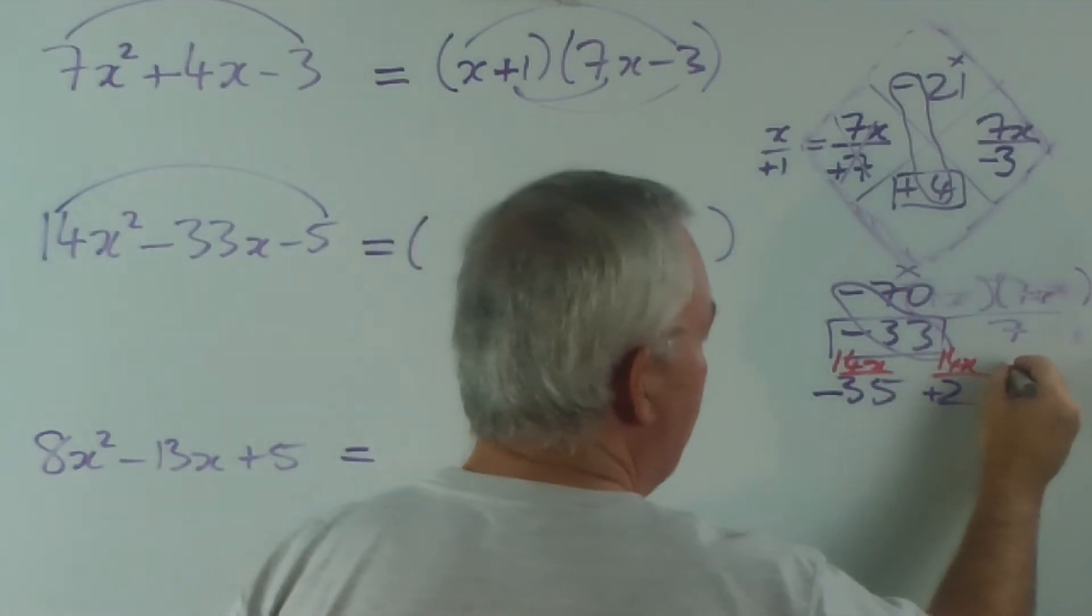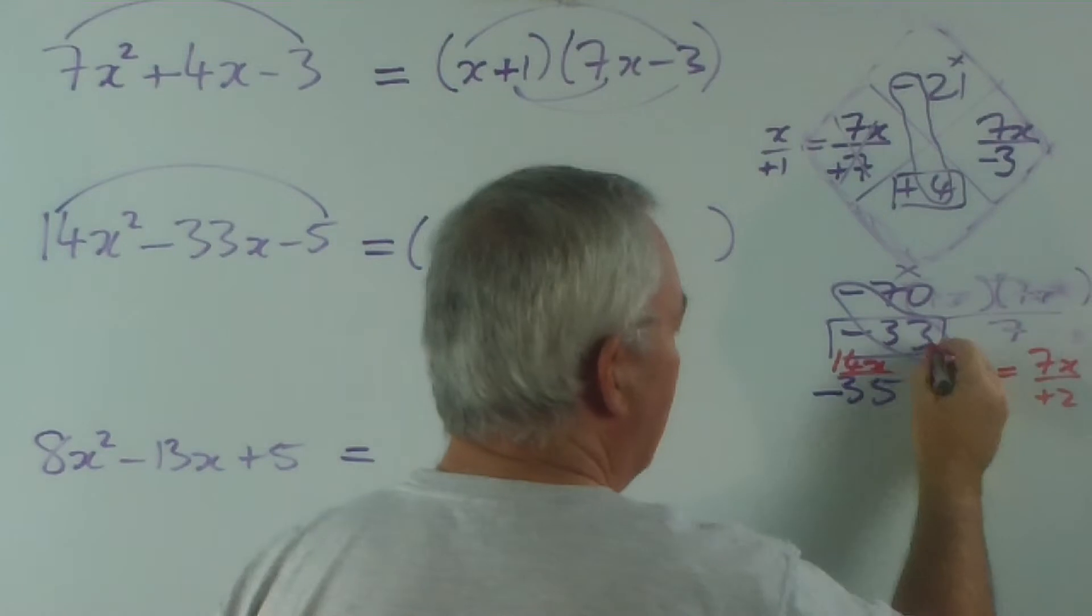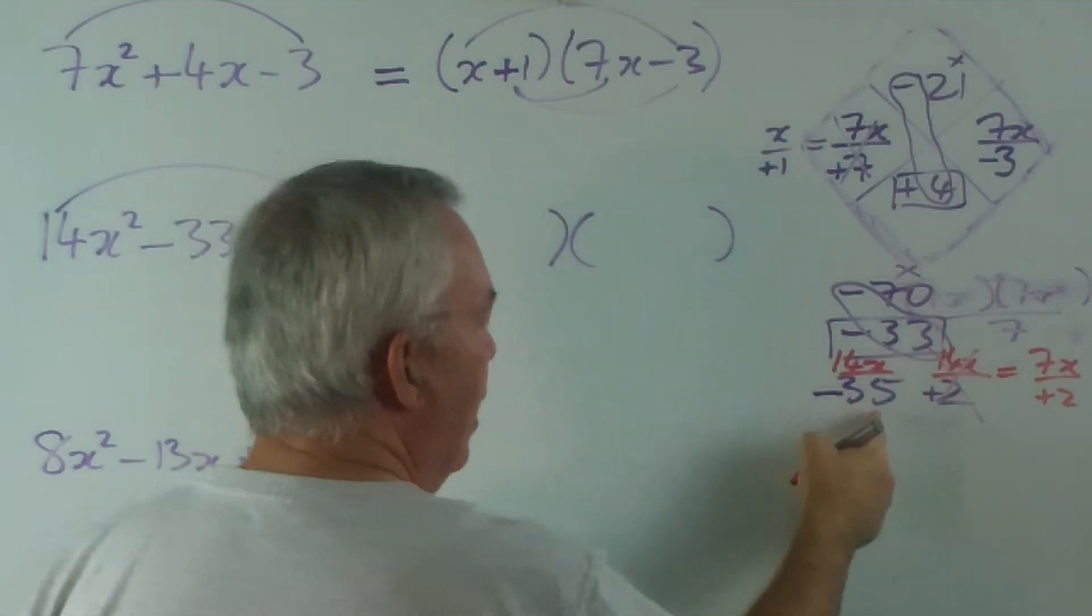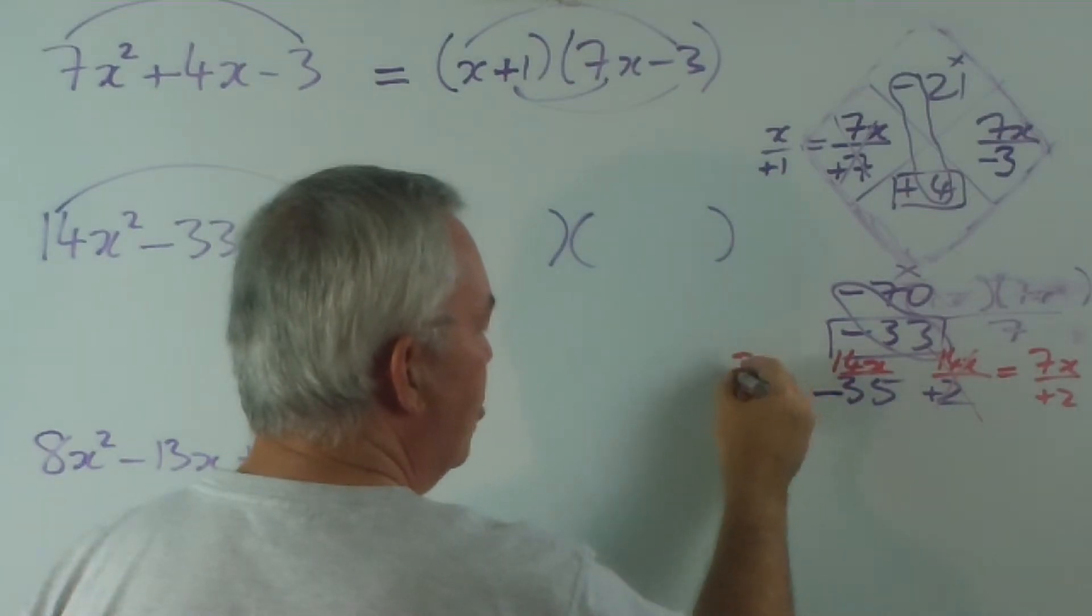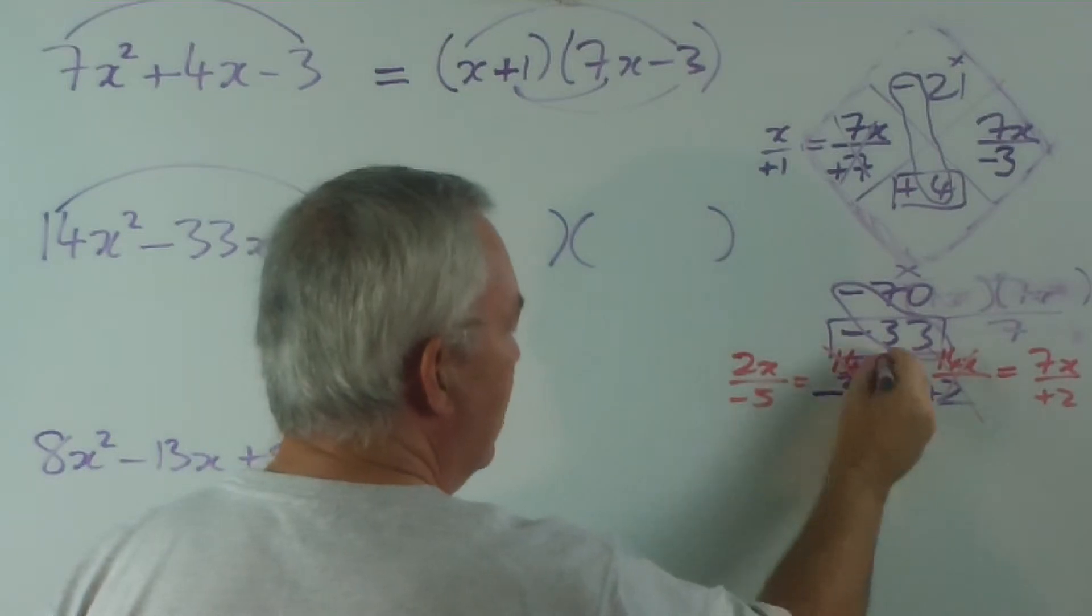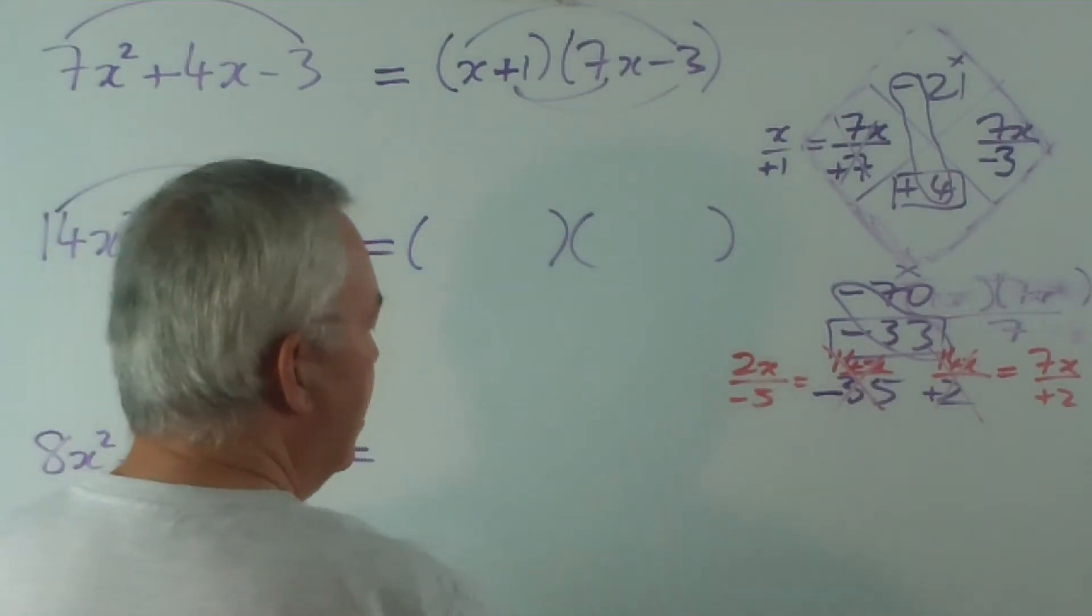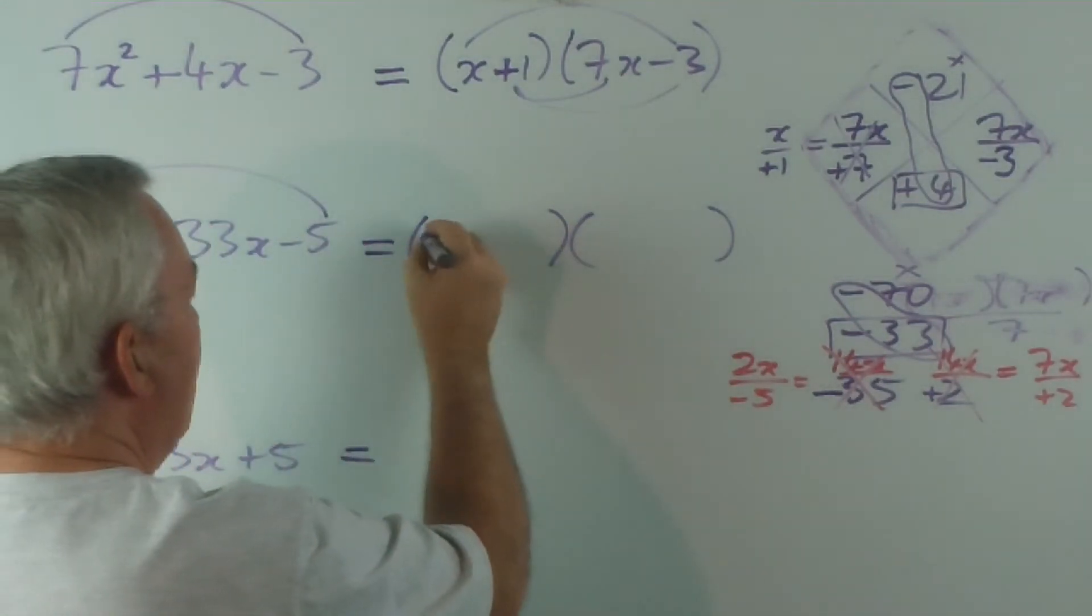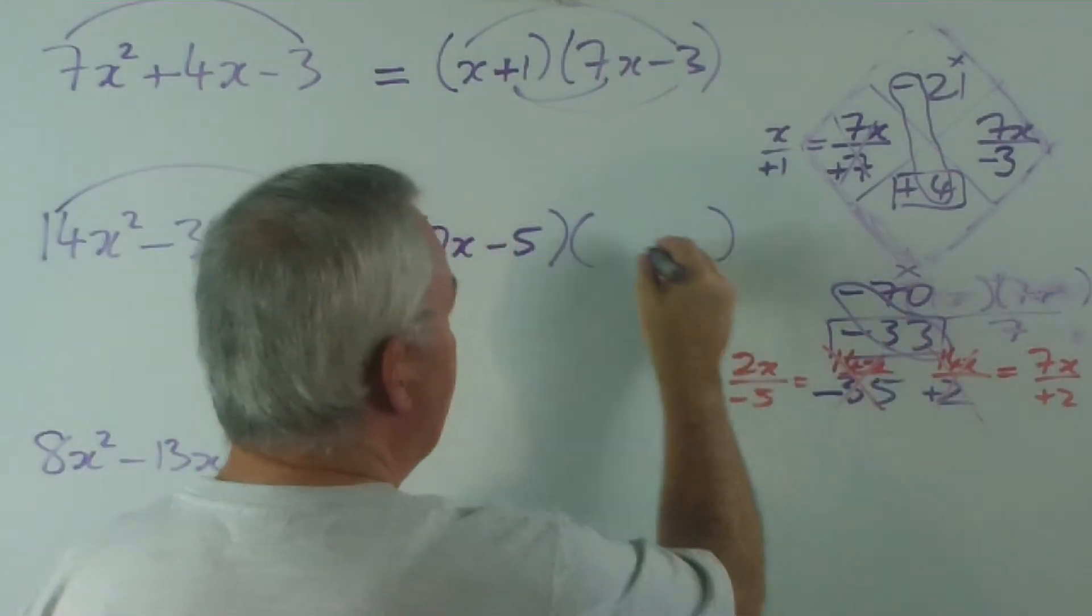Now, 2 will go into 14, so this is equal to 7x over. And I can now cross - so if I divide them both by 7, I get 2x over -5. So both of these have been reduced now and my two factors will be 2x-5 and 7x+2.